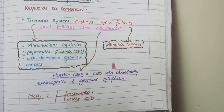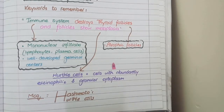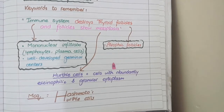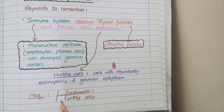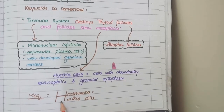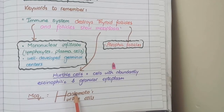In exams, they commonly ask an MCQ that Hurthle cells are specific for which type of thyroiditis. And now obviously you will know the answer — it is Hashimoto's. H stands for Hashimoto's as well as Hurthle cells.